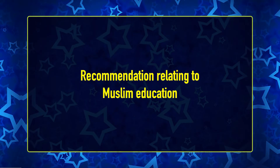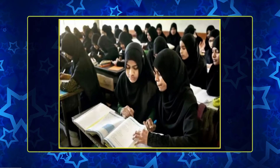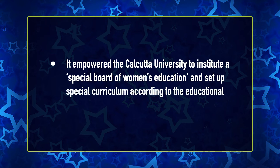Regarding recommendations related to Muslim education: first, Muslims should be provided all educational facilities given their backward state in the field; second, Parda schools should be organised for girls up to the age of 16 years; and third, Calcutta University was empowered to institute a special board of women's education and set up a special curriculum according to the educational needs of women.